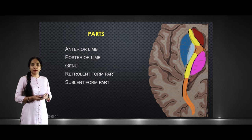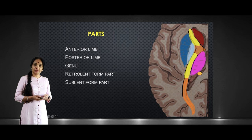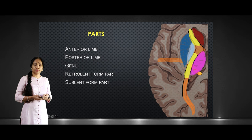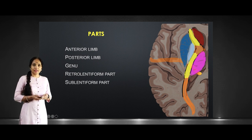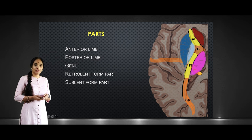The fifth part is the sublentiform part, which as its name suggests passes under the lentiform nucleus. It starts from the medial geniculate body of the thalamus, and these fibers pass under the lentiform nucleus towards the auditory centers and the temporal lobe, carrying auditory radiation. So to summarize, the parts are: the anterior limb, the genu, the posterior limb, the retrolentiform part, and the sublentiform part.